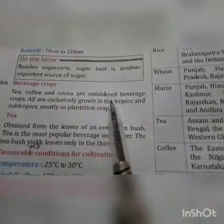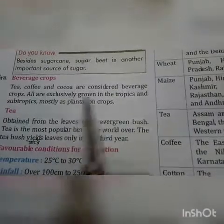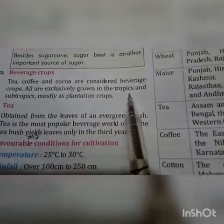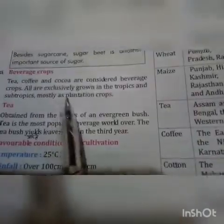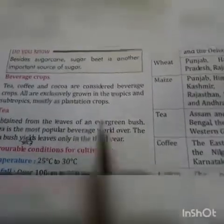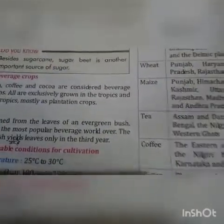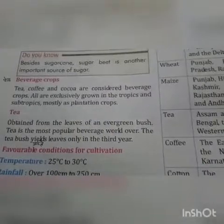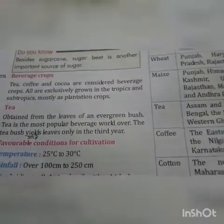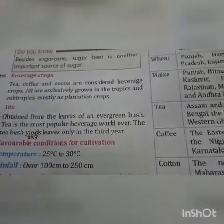Beverage crops: tea, coffee and cocoa are considered beverage crops. All are exclusively grown in the tropics and subtropics, mostly as plantation crops.